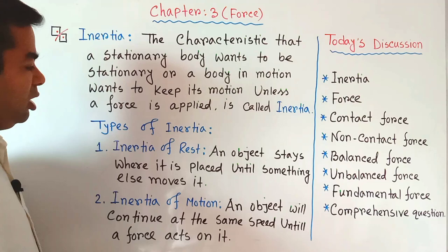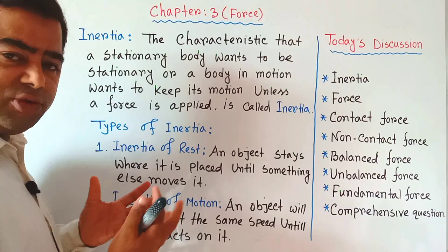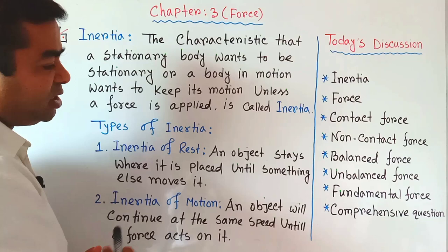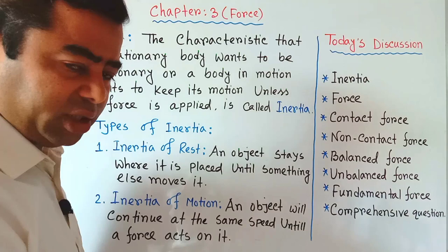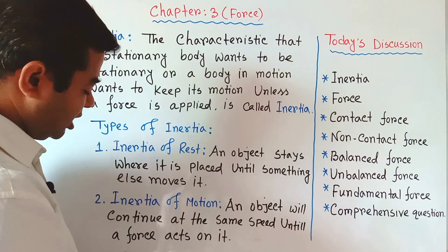Types of inertia. There are two types of inertia. First, inertia of rest: an object stays where it is placed until something moves it. Second, inertia of motion: an object will continue at the same speed until a force acts on it.